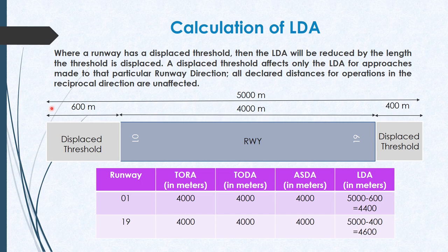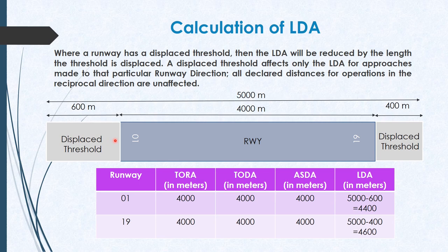As in the image, we have a runway of total length 5000 meters. The length between the two thresholds is 4000 meters. The displaced threshold at the beginning of runway 01 is 600 meters, and the threshold for runway 19 is displaced by 400 meters. For runway 01, an aircraft coming in for landing sees the threshold displaced by 600 meters. The LDA becomes 4000 plus 400, that is 4400 meters — or equivalently, 5000 minus 600, which is 4400 meters, as you can see here.